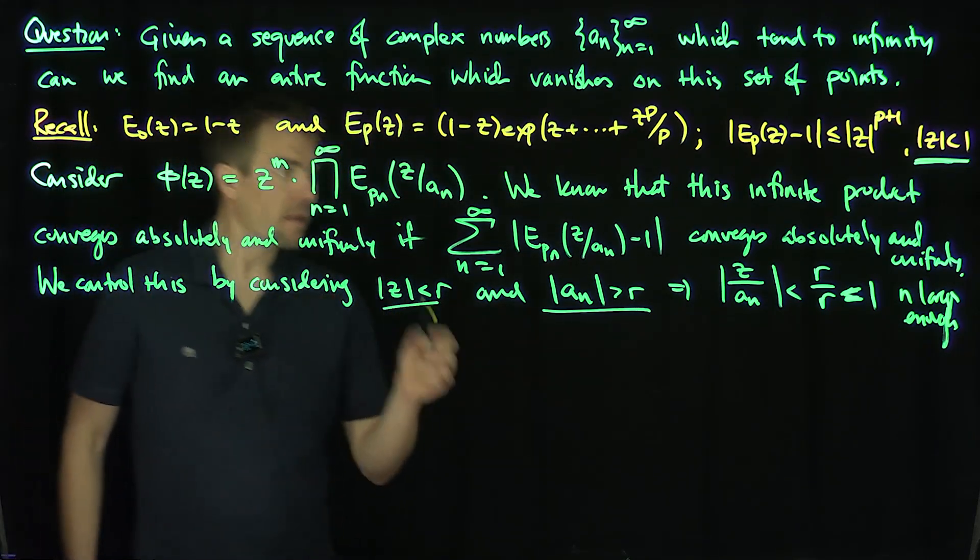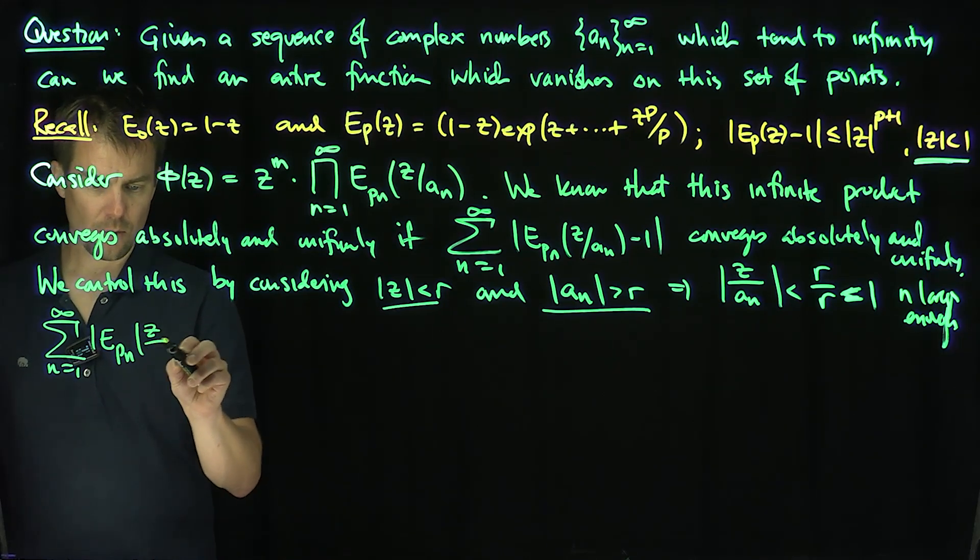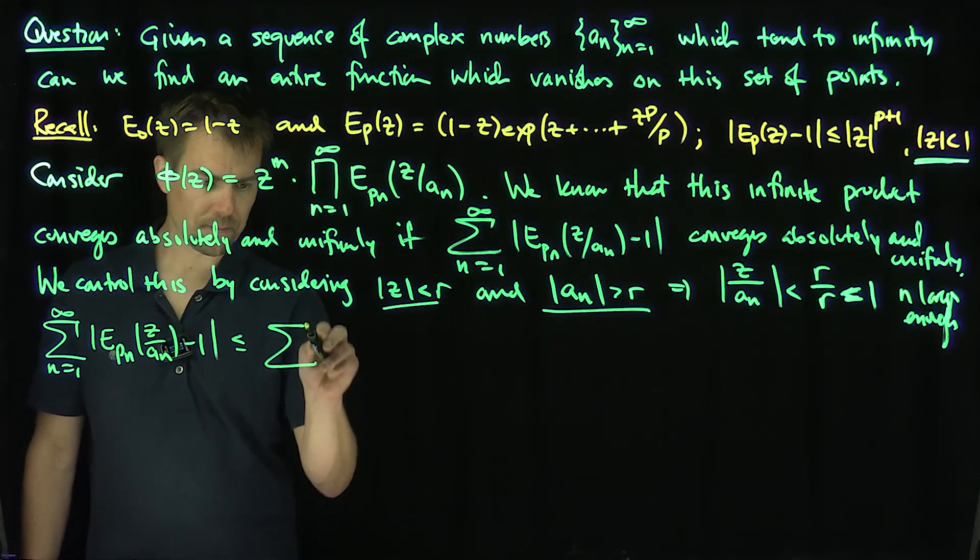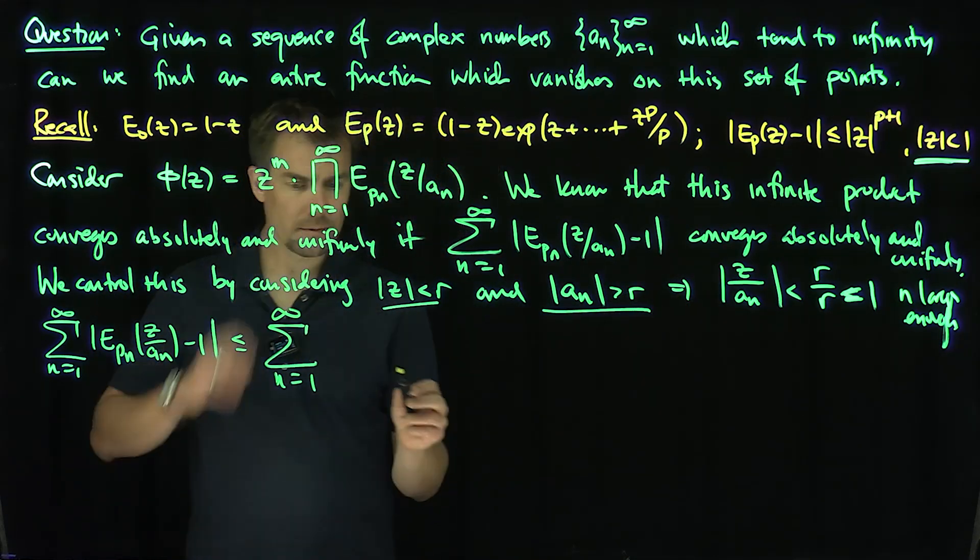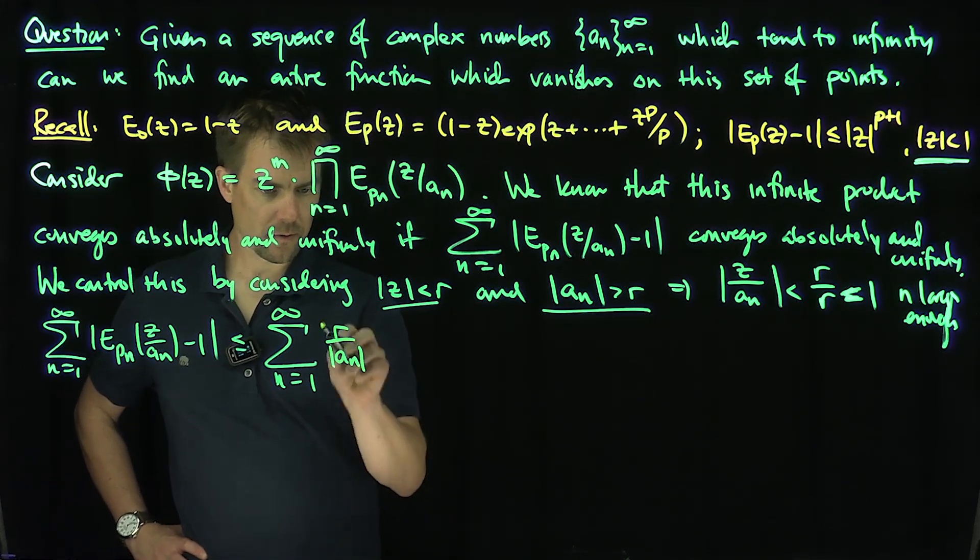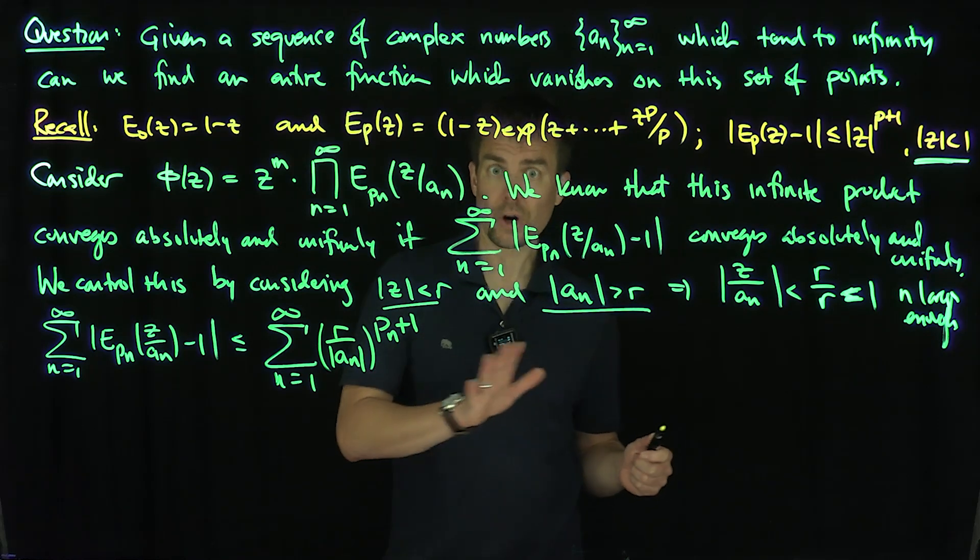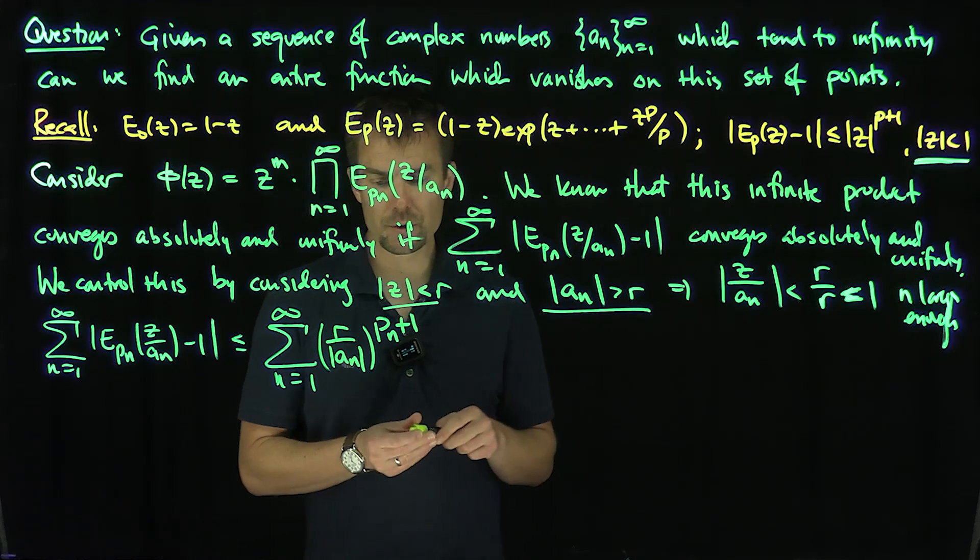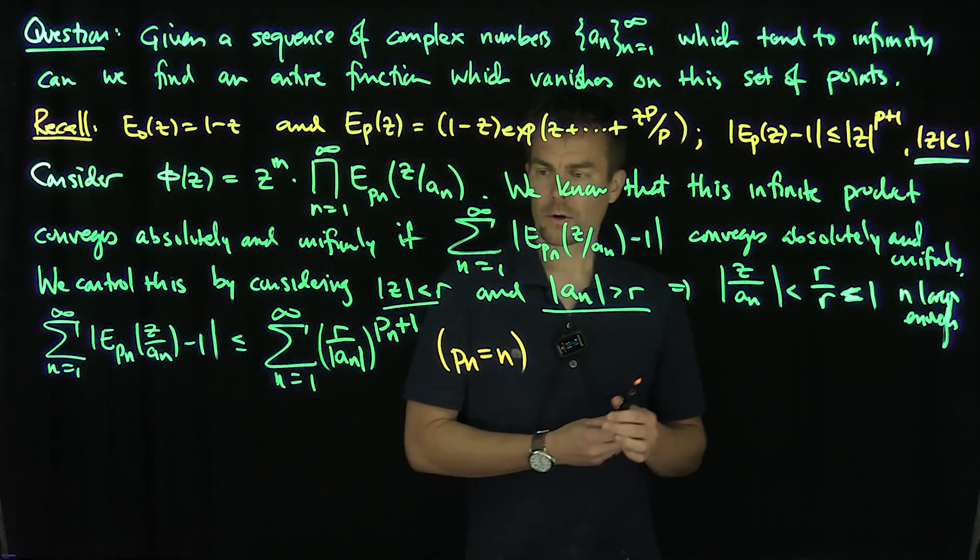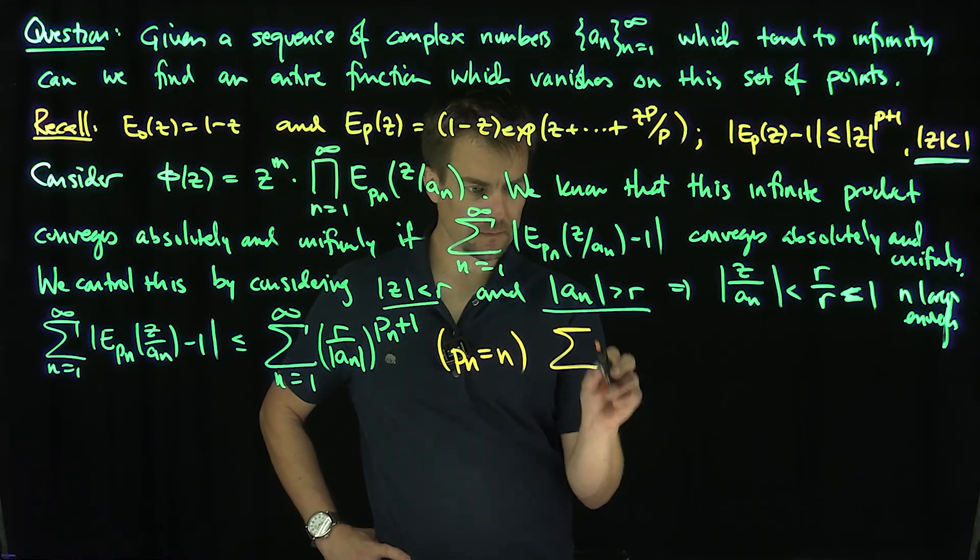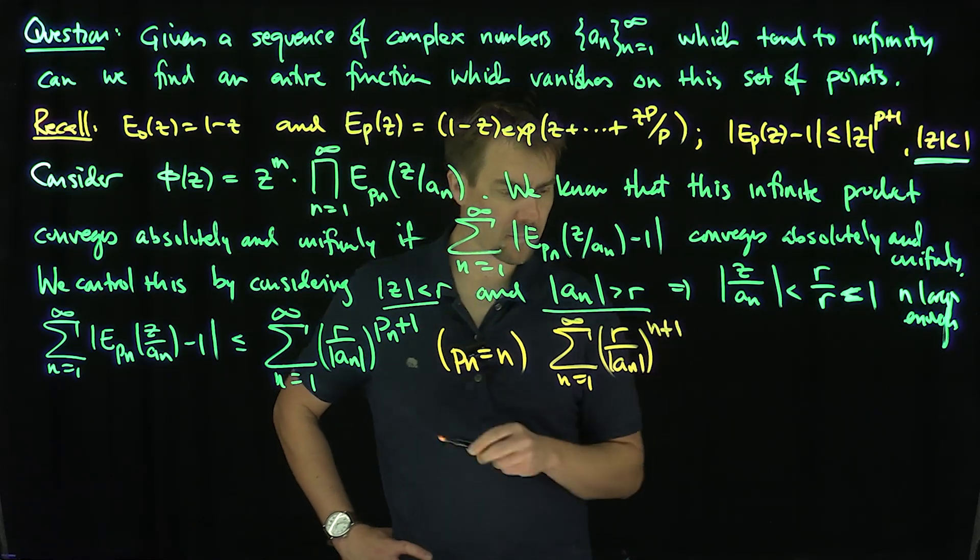Then we can say that our sum n goes from 1 to infinity of e_p_n z over modulus a minus 1 is less than or equal to the sum n goes from 1 to infinity of modulus r over modulus a_n to the p_n plus 1. And so if I choose my p_n correctly, we will show that this is going to converge. In particular, I'm going to choose p_n to be n. If p_n is equal to n, then this becomes the sum n goes from 1 to infinity of r over modulus a_n to the n plus 1.